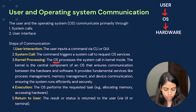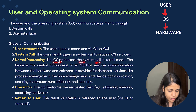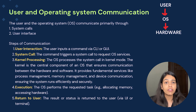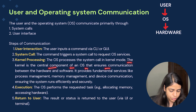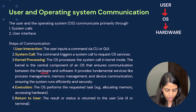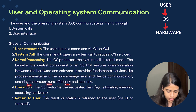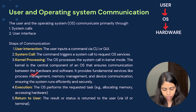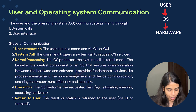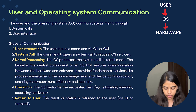The third step is kernel processing. The operating system processes the system call in kernel mode. As discussed in the last set of videos, the kernel is the core part of the operating system. The kernel is the central component that ensures communication between hardware and software. It provides fundamental services like process management, memory management, and device communication, ensuring the system runs efficiently and securely.